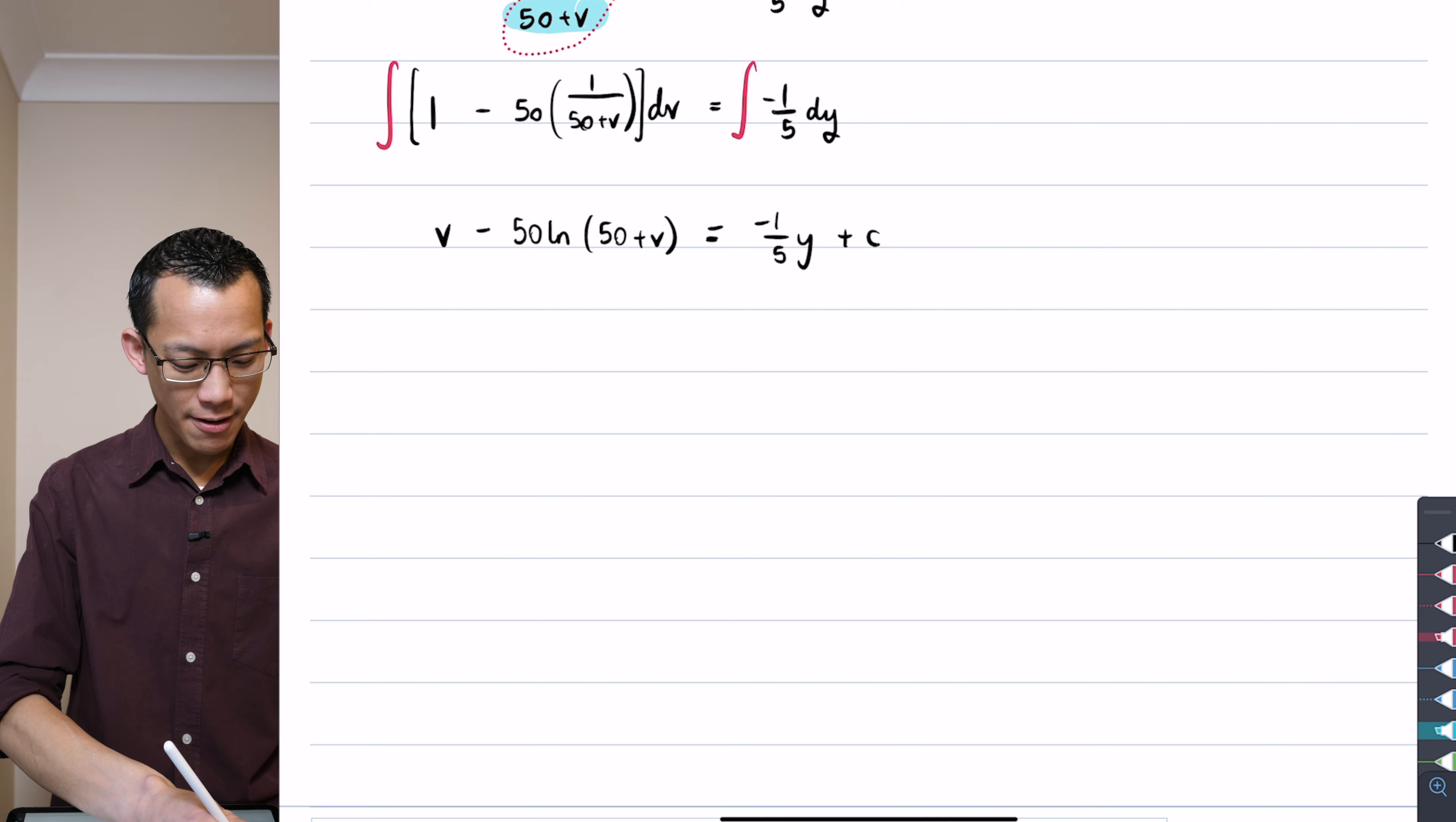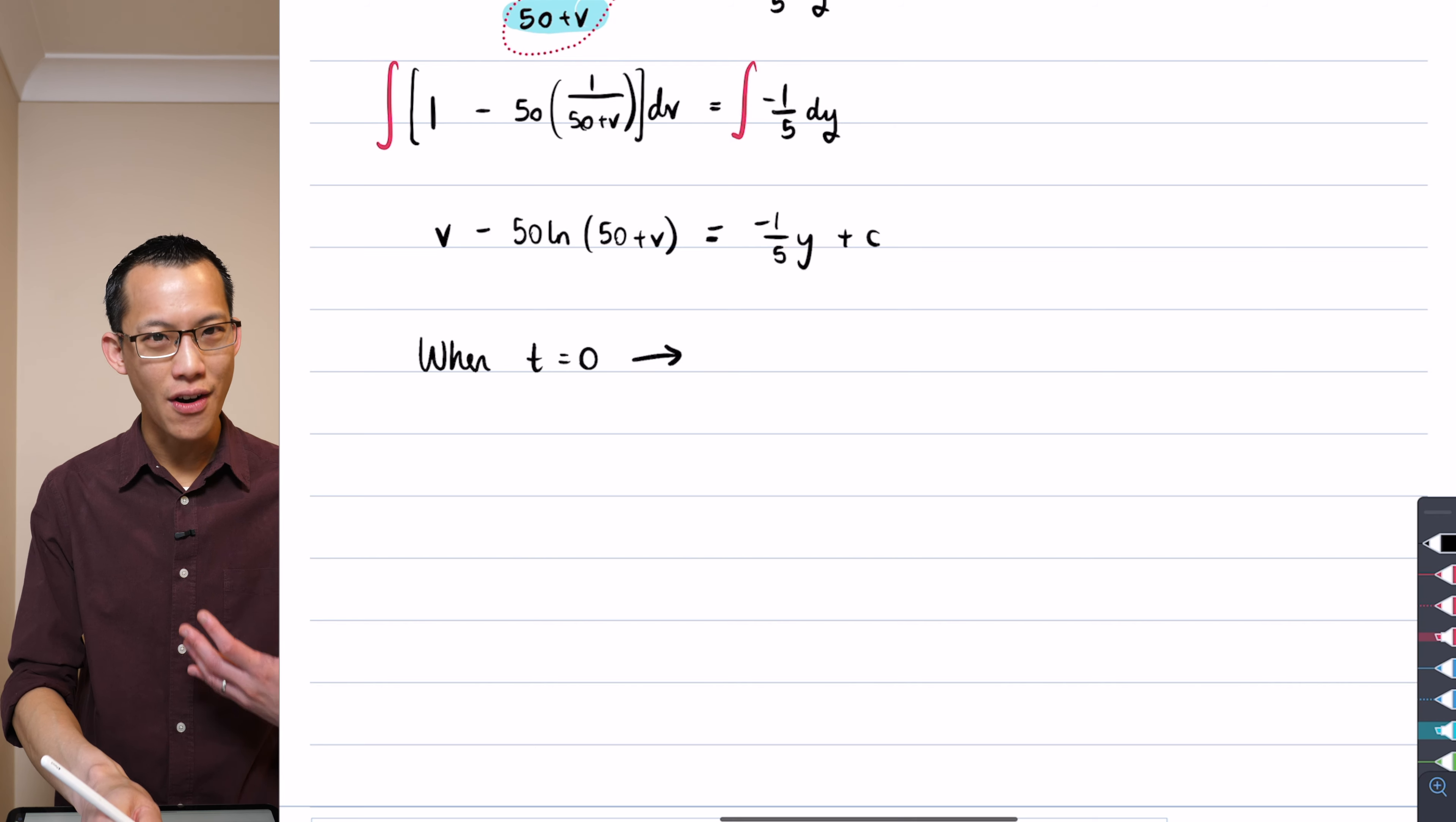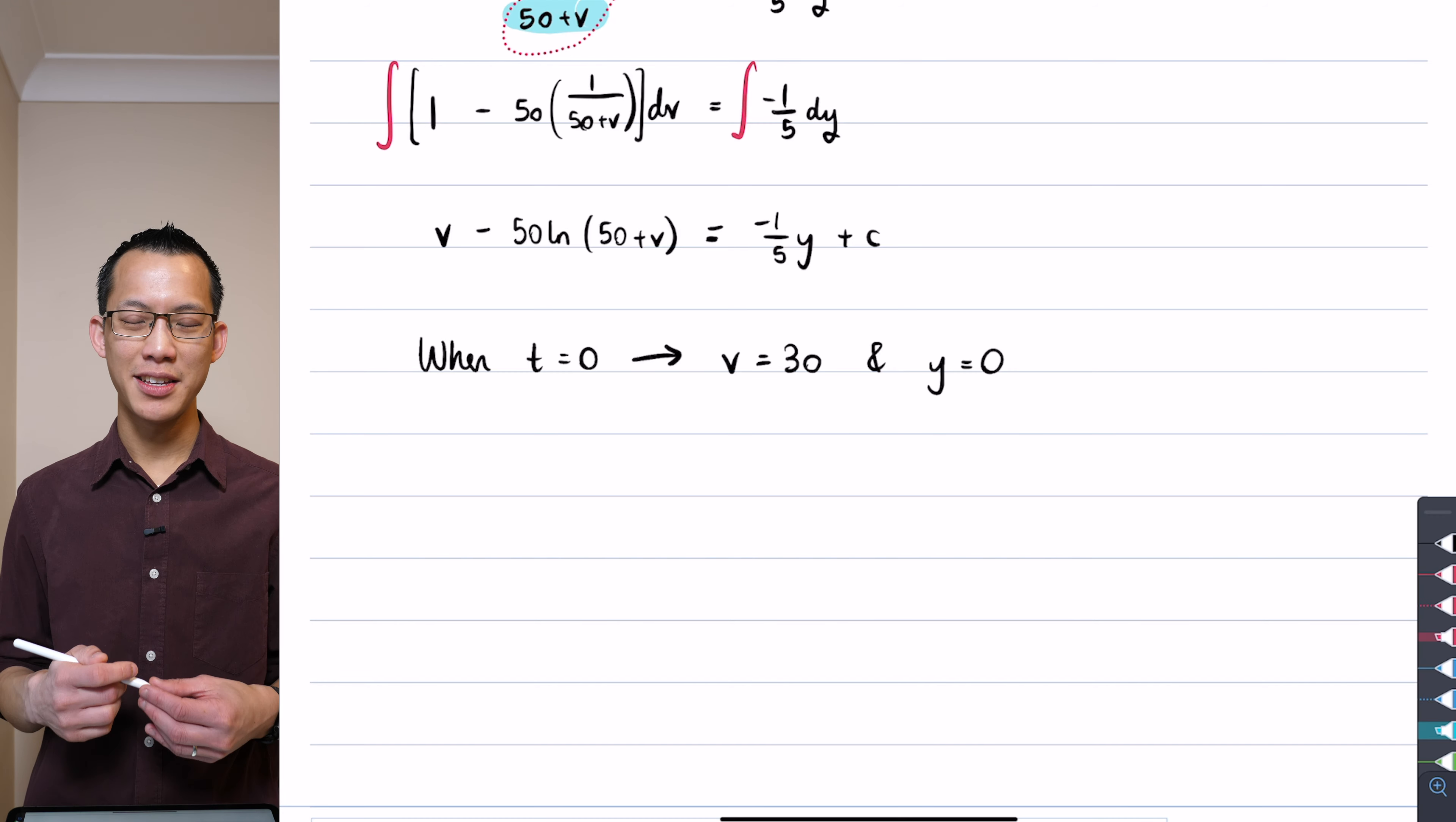So therefore my next line after this is that when time is equal to zero, even though I don't have any time variable in here, I have the other unknowns y and v that I actually know at time zero. So the initial velocity was 30 and by definition my initial displacement from that point of projection is zero. Those are going to be my v equals 30 and my y equals zero that I substitute in.